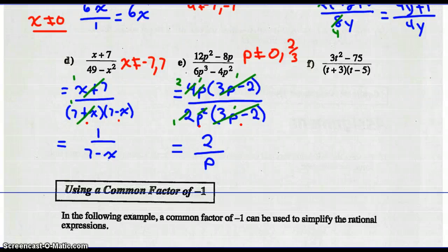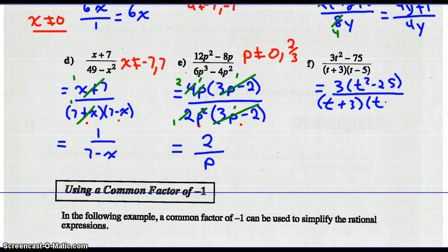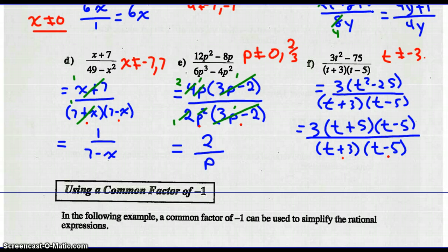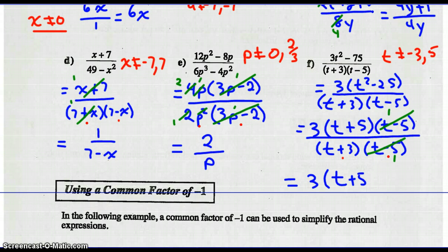For part F, factor the numerator (3t²−75) by taking out a 3, leaving (t²−25) over (t+3)(t−5). That's a difference of squares, giving 3(t+5)(t−5) all over (t+3)(t−5). State restrictions: t cannot equal negative 3 or positive 5. Now reduce: (t−5) divided by (t−5) is 1. No other common factors, so the simplest form is 3(t+5) over (t+3).